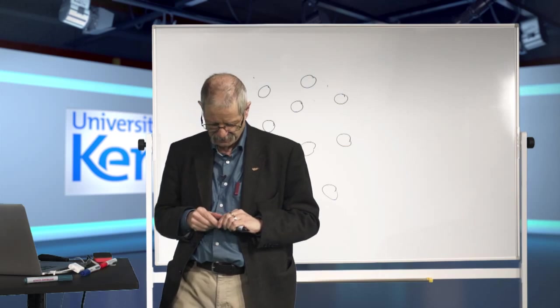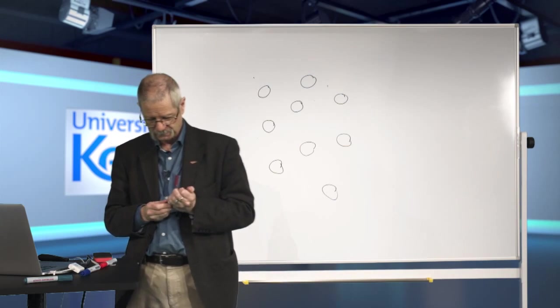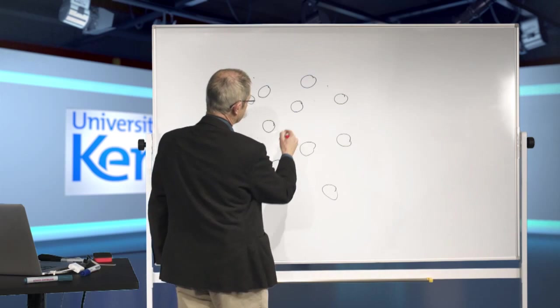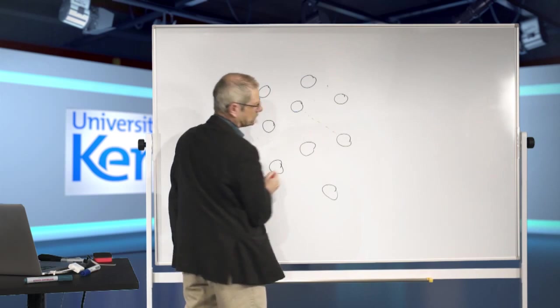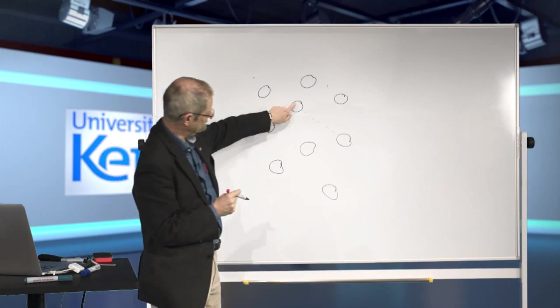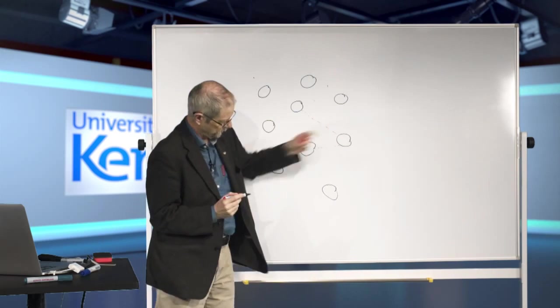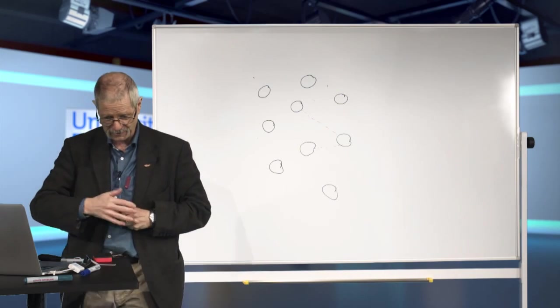So what we've added to Erlang is the notion of a link. The link, I'll show a link in red. So this dotted red line, that represents a link between these two processes.